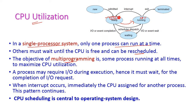In multiprogramming, some process will always run on the CPU, so we can maximize CPU utilization. While running a particular process, it may require IO or wait for an event, and it will go back to the waiting queue until it completes its IO request or the other event. Sometimes an interrupt may occur, and immediately the CPU will schedule another process — hence CPU scheduling is very important in designing the operating system.